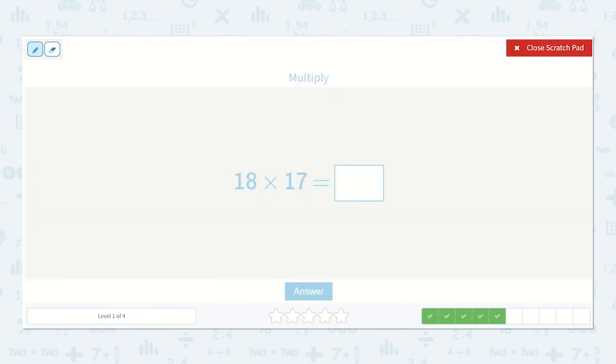Now we have 18 times 17. So 7 times 8 is 56. I'll put my 6 in the ones place, and the 5 in the tens place. Now 7 times 1 is 7, plus 5 more is 12.